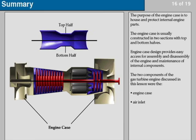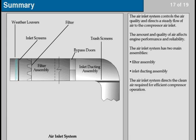Summary: The purpose of the engine case is to house and protect internal engine parts. The engine case is usually constructed in two sections with top and bottom halves. Engine case design provides easy access for assembly and disassembly of the engine and maintenance of internal components. The two components of the gas turbine engine discussed in this lesson were the engine case and the air inlet. The air inlet system controls the air quality and directs a steady flow of air to the compressor air inlet. The amount and quality of air affect engine performance and reliability. The air inlet system has two main assemblies: the filter assembly and the inlet ducting assembly.